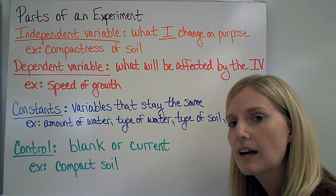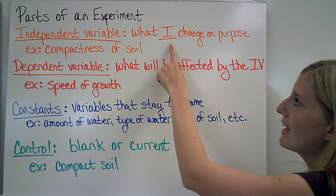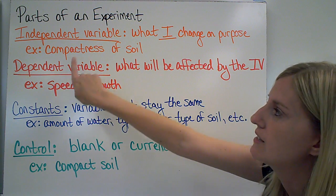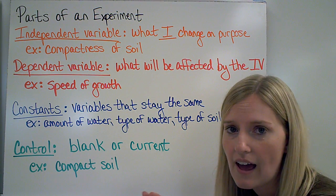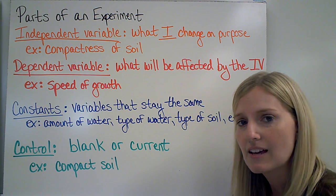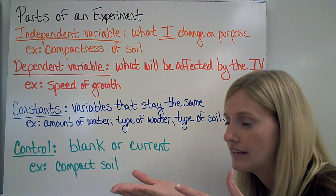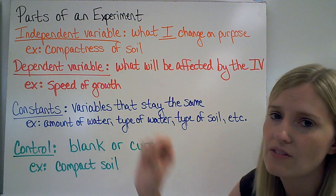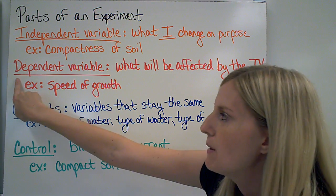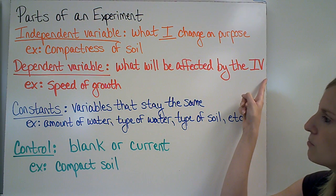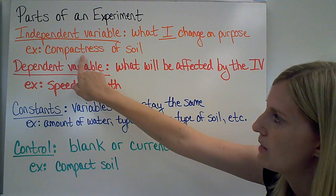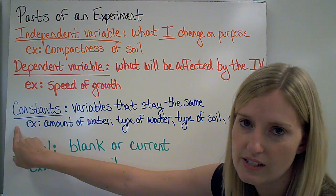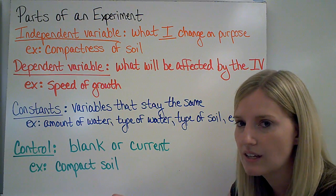When I set up my experiment, I typically have four parts. The first is the independent variable — that's what I'm changing on purpose. In this experiment, the thing I'm changing between these two carrot seed plants is how compact the soil is. That's it. Everything else needs to stay the same. If it's not the same, at the end when I have two different results, I won't know if it's because I used a different type of water or it had more sunlight, etc. The only way I know for sure it was the compactness of the soil is if that's the only thing that changed. The dependent variable is what we think is going to be affected by the independent variable — in this case, changing the compactness of soil is going to affect the speed of growth of the seeds.